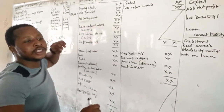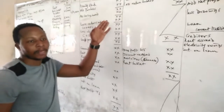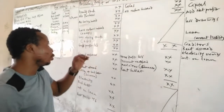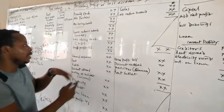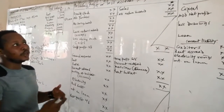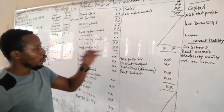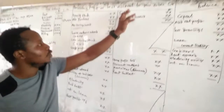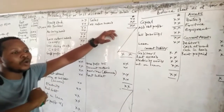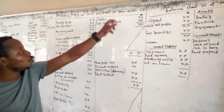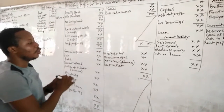Returns outwards reduces your purchases — if you bought 100 units and 50 were not good, you return them. After returns outwards, you have cost of goods available for sale. Subtract closing stock to get cost of goods sold. On the credit side, take sales, less returns inwards, to get net sales, then subtract cost of goods sold to get gross profit.